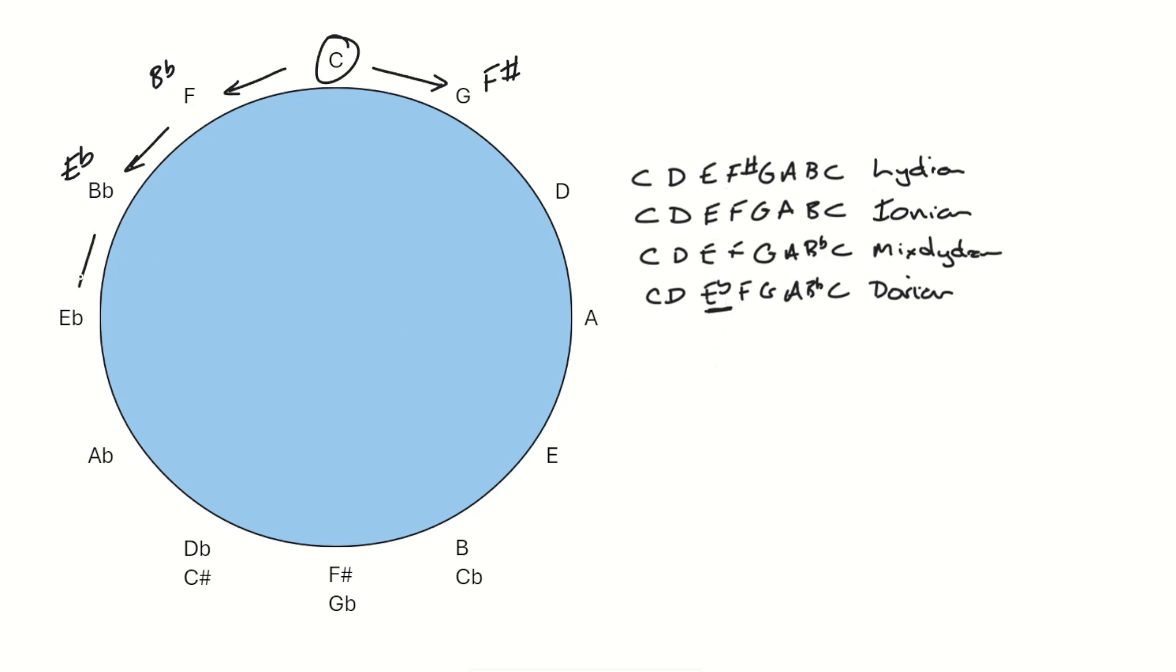If we take another step around the cycle, we would be adding Ab at this step. And if we do that to our scale, C, D, Eb, F, G, Ab, Bb, and C, we end up with what is known as an Aeolian mode, or the natural minor scale.